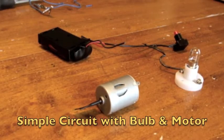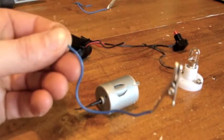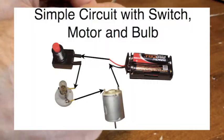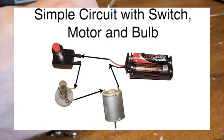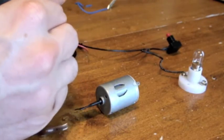Alright, one more example of a simple circuit. This time we're going to add in a motor. The battery pack is going to go to the switch, and then the current will flow to the bulb, then to the motor, and then back to the battery, completing the loop.